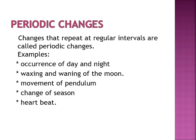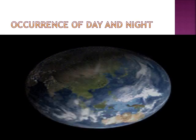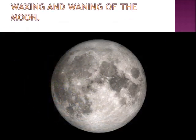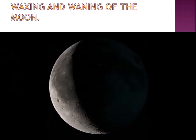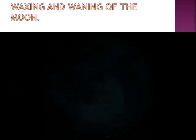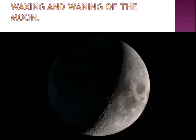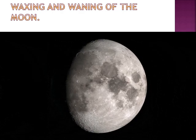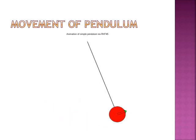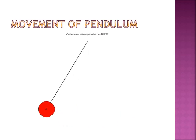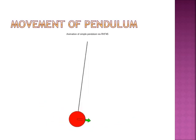Next, we come to periodic changes. Changes that repeat at regular intervals of time are called periodic changes. The occurrence of day and night, and the waxing and waning of the moon — you can see how the shape of the moon changes and it repeats after every 29 days. The movement of the pendulum of a clock: when the bob is displaced from its equilibrium position and released, it begins its back and forth vibration about its equilibrium position. The motion is regular and repeating.